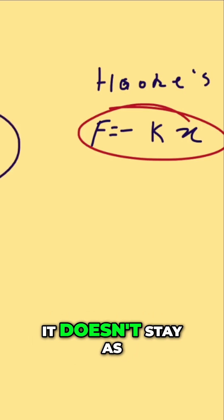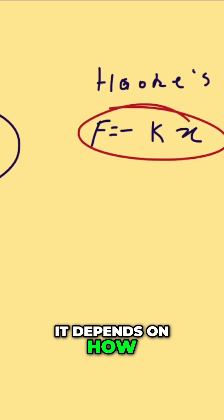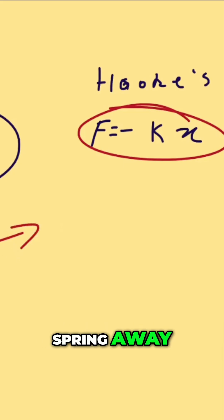This says that acceleration is not constant—it doesn't stay as one value. It depends on x, on how far you pull your spring away from equilibrium.